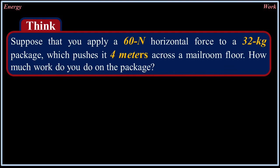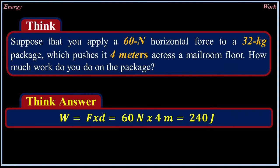Think: suppose that you apply a 60-newton horizontal force to a 32-kilogram package, which pushes it 4 meters across the floor. How much work do you do on the package? Work equals force times distance, which equals 60 newtons times 4 meters, which equals 240 joules.